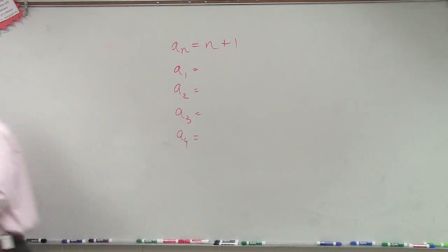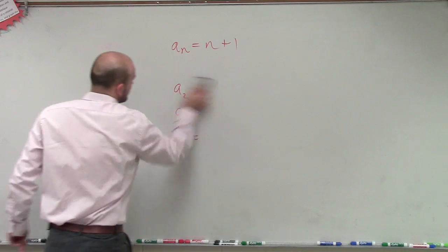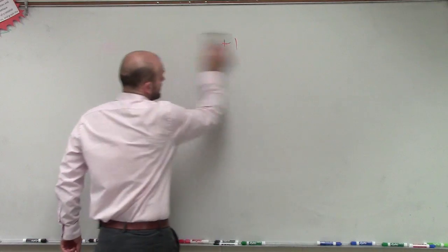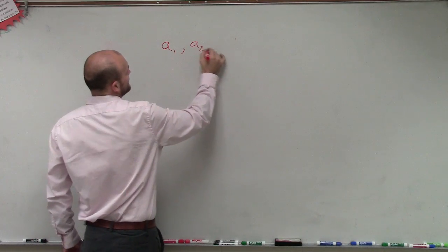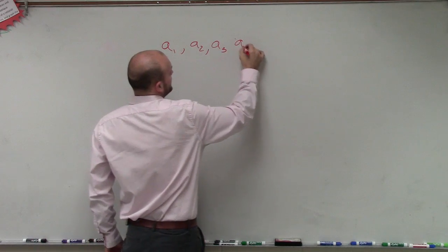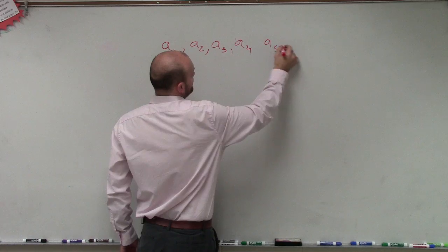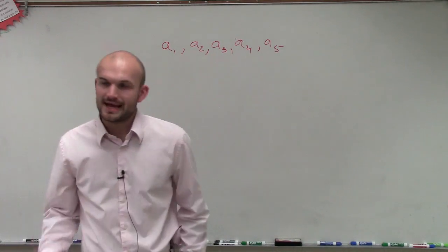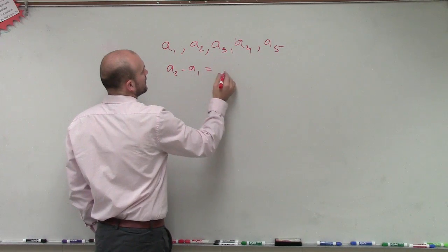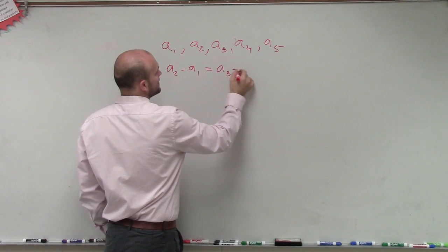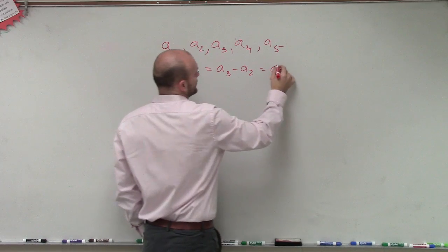Now the next thing that we went over was we said, alright, well, what if we had a set of terms? a sub 1, a sub 2, a sub 3, a sub 4, and a sub 5. And then what if we are able to take the difference of two consecutive terms and set those equal to each other?